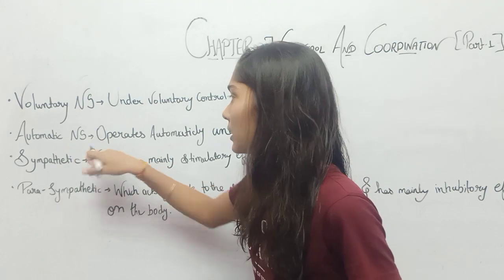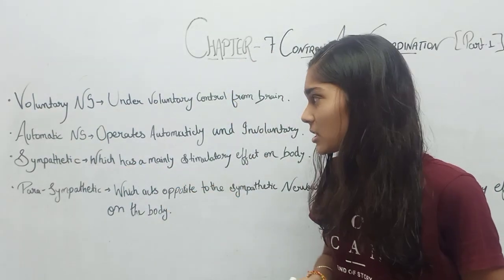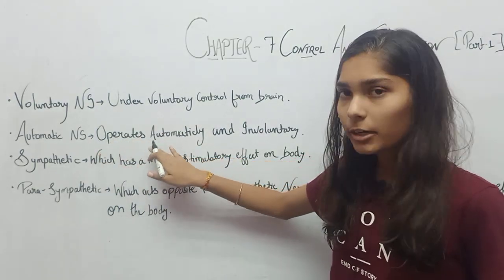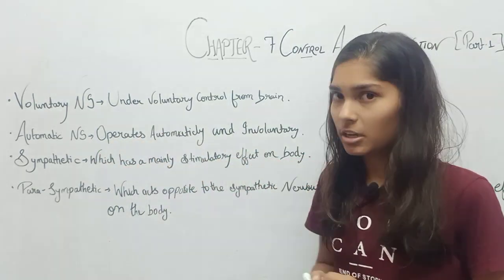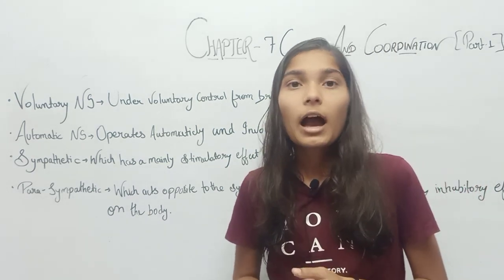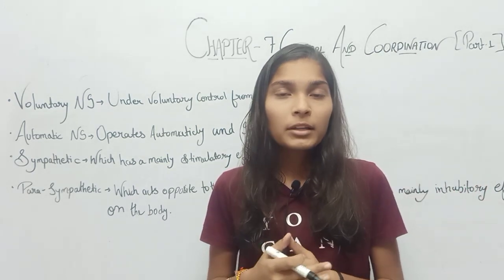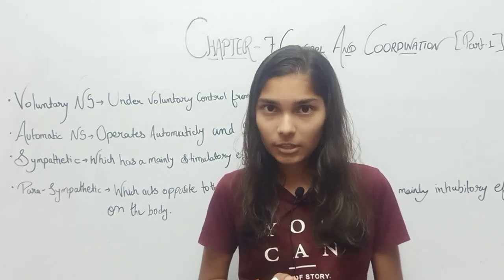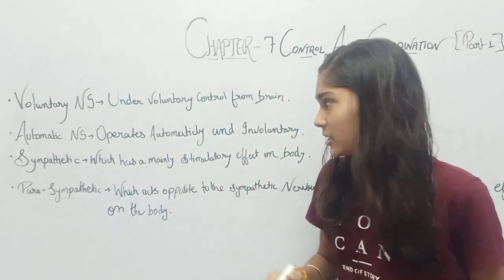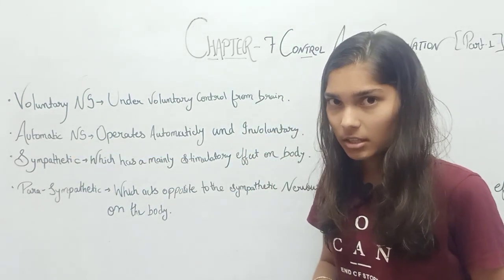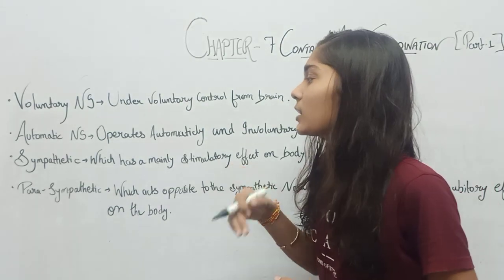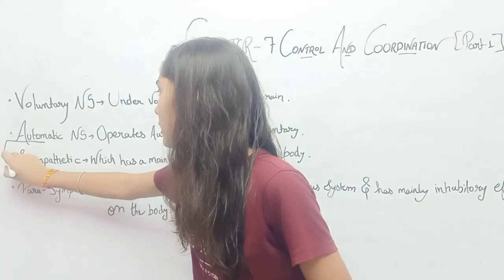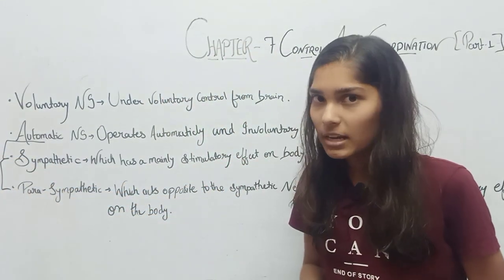Next is the Automatic Nervous System, which operates automatically or involuntarily — not under our control. For example, our heartbeat is not in our control; we cannot stop our heartbeat. This is why it falls under the Automatic or Involuntary Nervous System, which includes Sympathetic and Parasympathetic divisions.